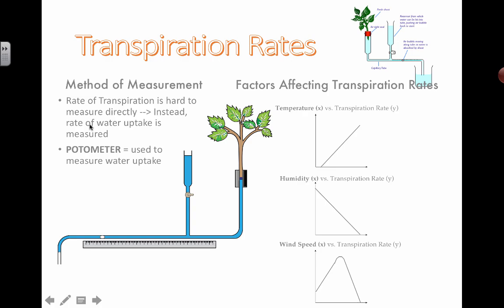So the rate of transpiration is hard to measure directly. And remember that transpiration is the movement of water, the inevitably sad movement of water through the plants because there are holes in the leaves that need to allow gas to come in for photosynthesis. So the water ends up leaving and the water can move up.